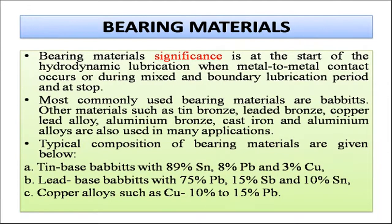Regarding bearing materials: their significance is that metal-to-metal contact occurs at the start of hydrodynamic lubrication, during mixed and boundary lubrication, and at stop. The most commonly used bearing materials are babbits. Other materials such as tin bronze, leaded bronze, copper-lead alloy, aluminum bronze, cast iron, and aluminum alloys are also used. Typical compositions: tin-based babbits (89% Sn, 8% Pb, 3% Cu), lead-based babbits (75% Pb, 15% Sb, 10% Sn), and copper alloys with 10–15% Pb.